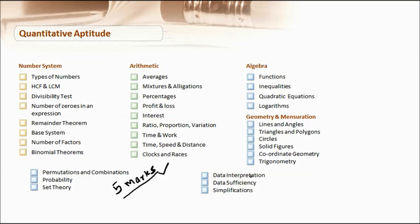Then apart from that, there is data insufficiency and simplifications. So broadly, quantitative aptitude will be classified into these six topics. What I say to you is just make a checklist of these topics so that you're able to understand where you are lacking.